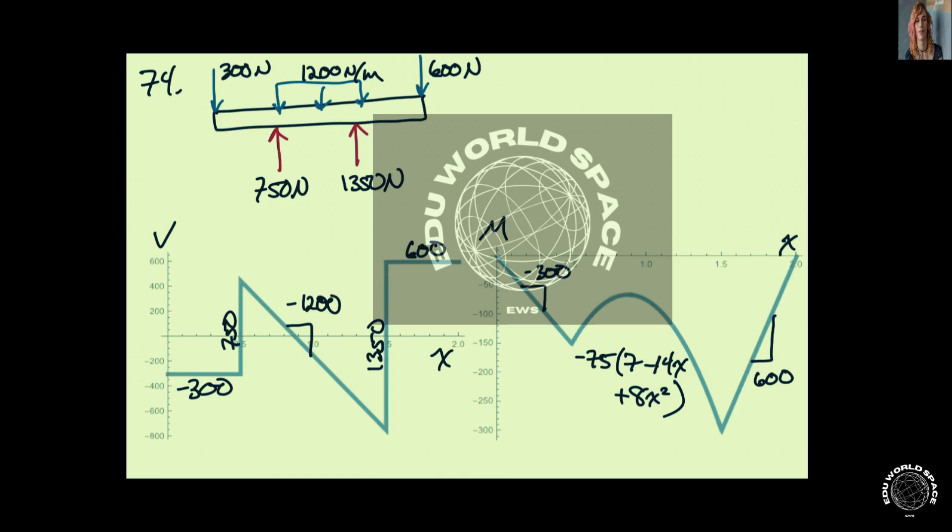Now, for the moment, in the outer regions, we have just a linear dependence. So the slope is minus 300 over here and plus 600 over here. And both start at zero.